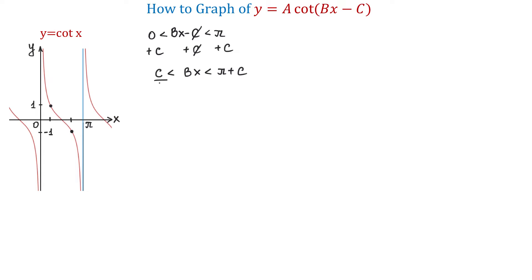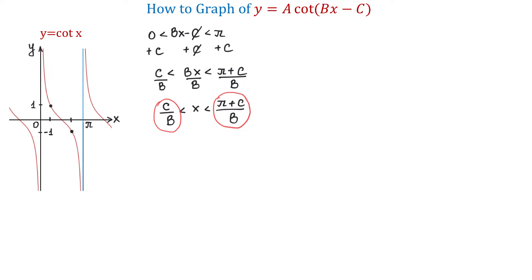Now we will divide all three parts by b, and we will get that x is greater than c over b and is less than pi plus c over b. These two expressions represent the new vertical asymptotes for the function y equals a cotangent of bx minus c. So this function will complete one period as x changes between c over b and pi plus c over b.